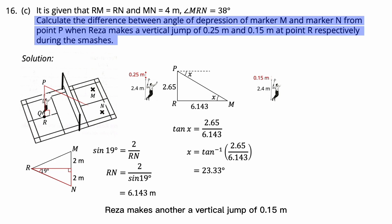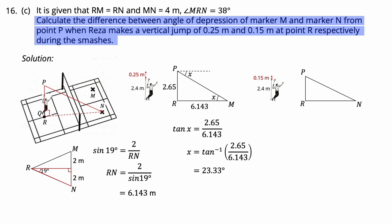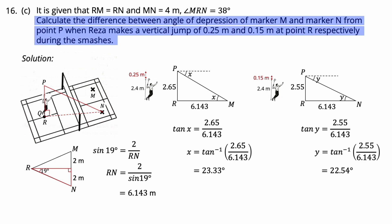For the 0.15 m jump, forming right-angle triangle PRN: height PR equals 2.4 + 0.15 = 2.55 meters, RN equals 6.143 meters. Let the angle of depression of marker N from P be Y. Using tangent: tan Y = 2.55 ÷ 6.143, so Y equals 22.54 degrees. Therefore, the difference between the angles of depression of marker M and marker N from point P is 23.33 − 22.54 = 0.79 degrees.